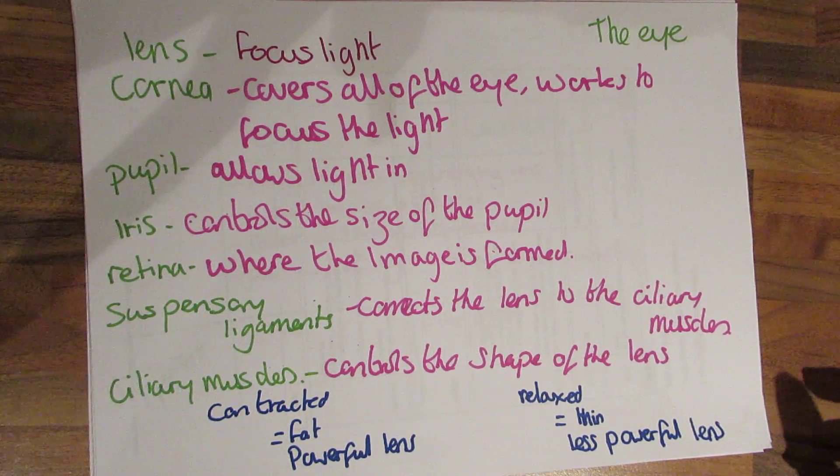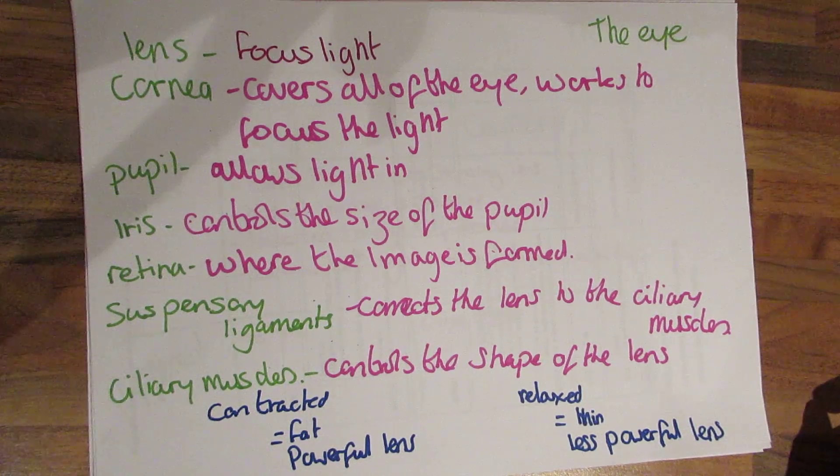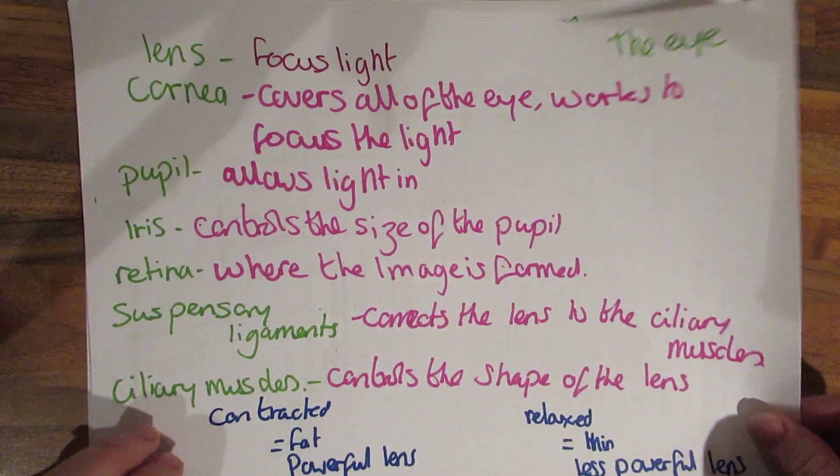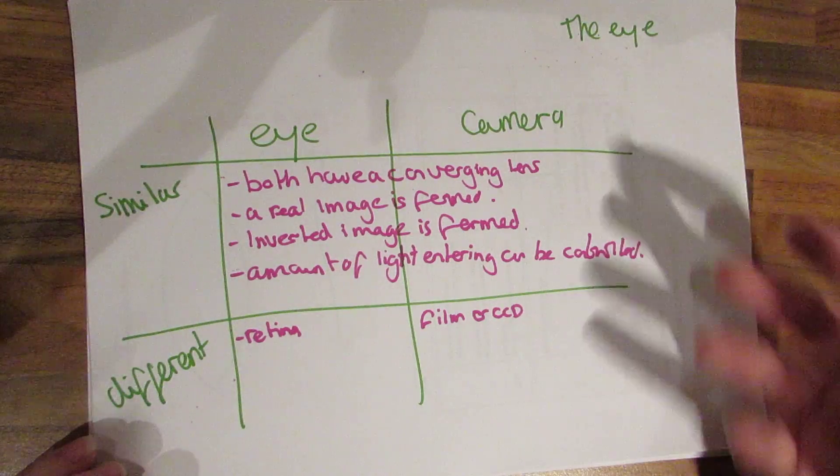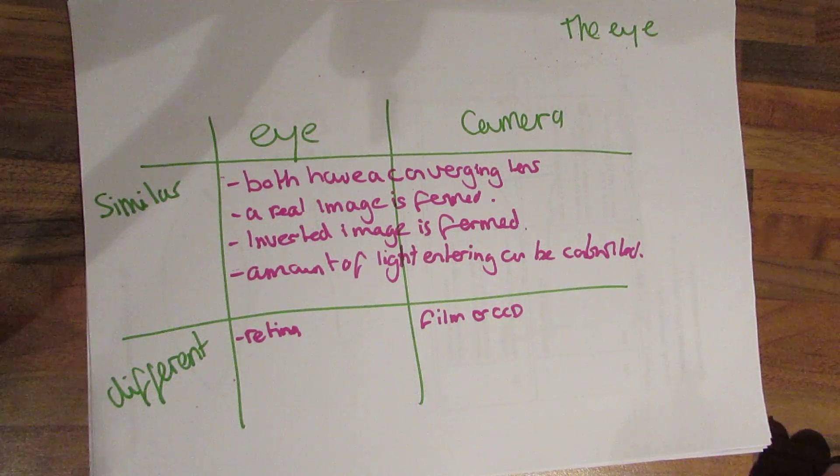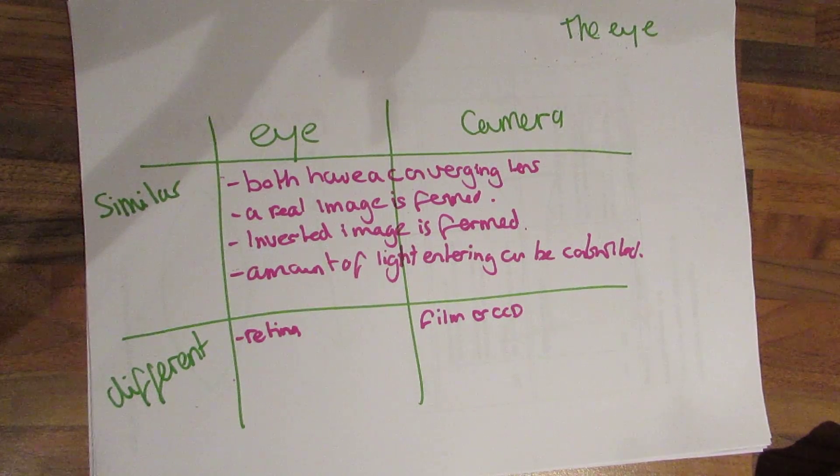So if they're contracted it's a fat powerful lens and if they're relaxed it's a thin less powerful lens. You could be asked some similarities between an eye and a camera.